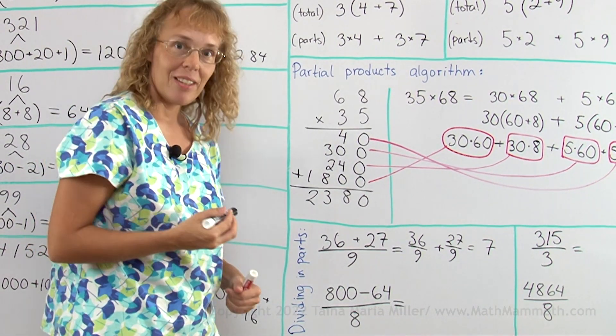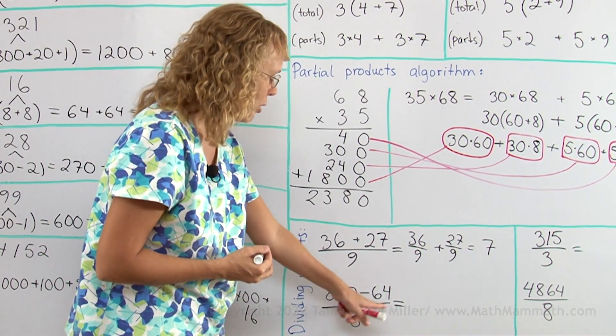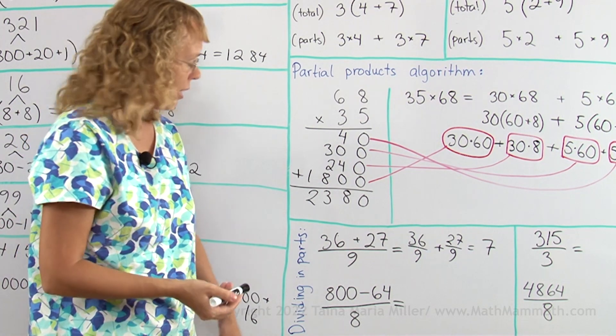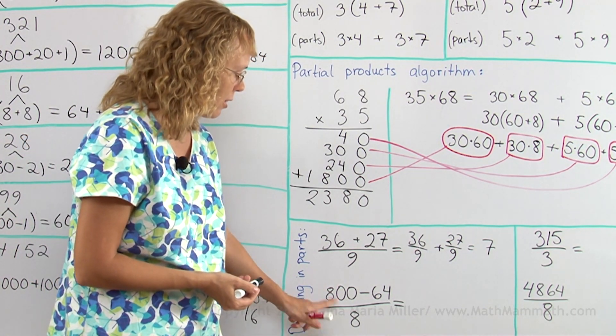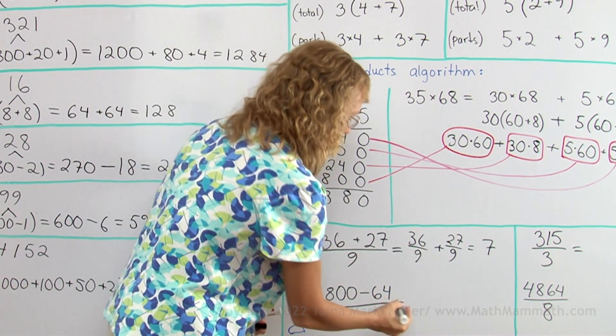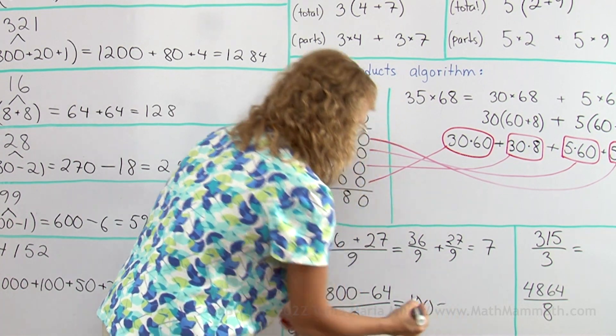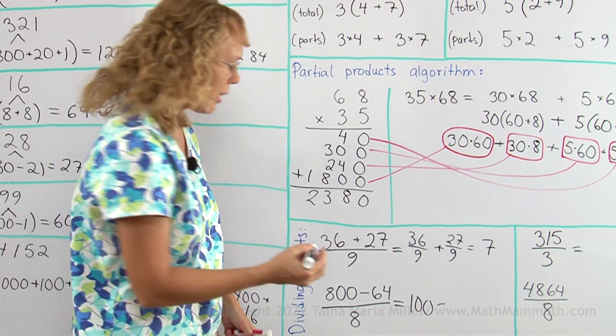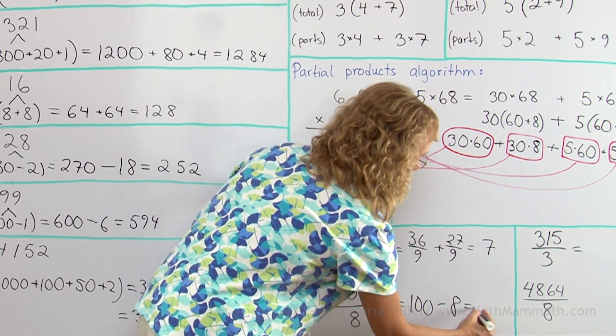It works the same way with subtraction. 800 minus 64 divided by 8, I can divide in parts. First, 800 divided by 8, which would be 100, and then 64 divided by 8, which is 8, so I get 100 minus 8, which is 92.